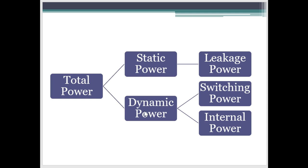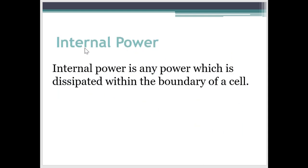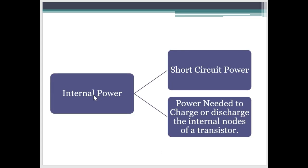Dynamic power has two components switching power and internal power. Now we will see what is internal power. Internal power is the power which is dissipated internal to the cell, within the boundary of a cell. It can be divided in two parts. Short circuit power which we will see in a while, and the power which is needed to charge or discharge the internal nodes of a transistor.